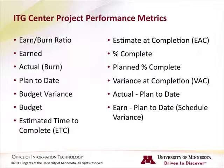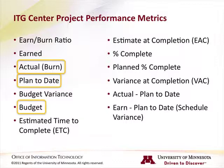Of the 13 metrics, there are four core metrics that are pulled directly from the data in your project and from approved timesheets. These four core metrics are: actuals, plan to date, budget, and estimated time to complete (ETC). The remaining nine metrics are calculated from these four core values. Let's take a closer look at these four core metrics.